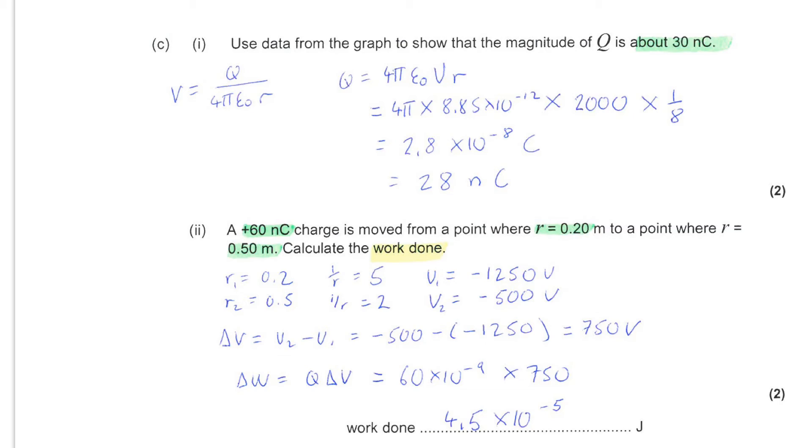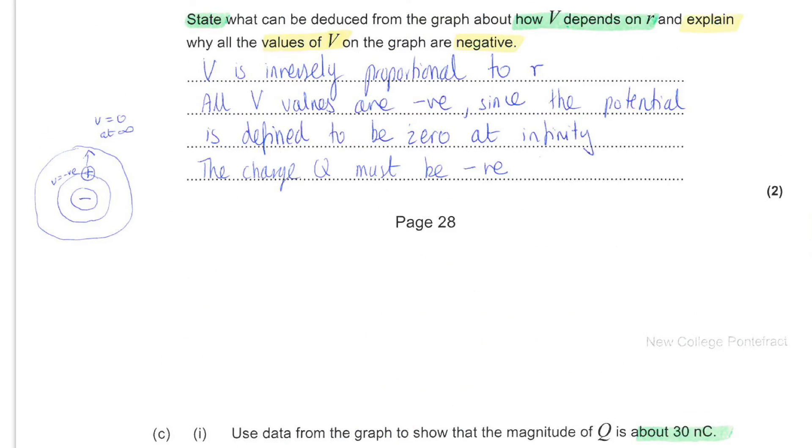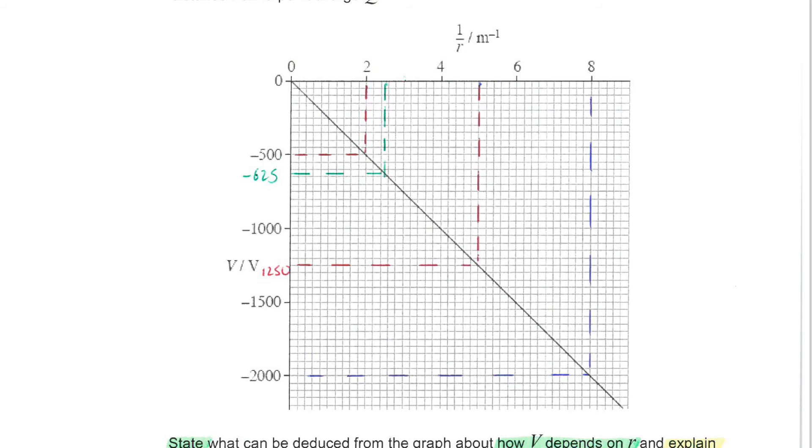So, looking back at the graph, for those two values, you can see it's the red lines that I've shown here. So, 1 over r of 5 leads to 1,250 volts, whereas 1 over r of a value of 2 leads to 500 volts.